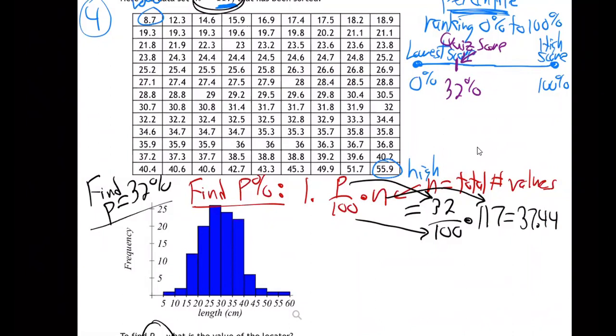And I'm getting 37.44. Is that good? So step number one, take your P value over a hundred times n, n being the total number of data values. So in my particular case, you'll have different numbers on yours, it's 32 divided by a hundred times 117. Comes out to be 37.44. Okay.